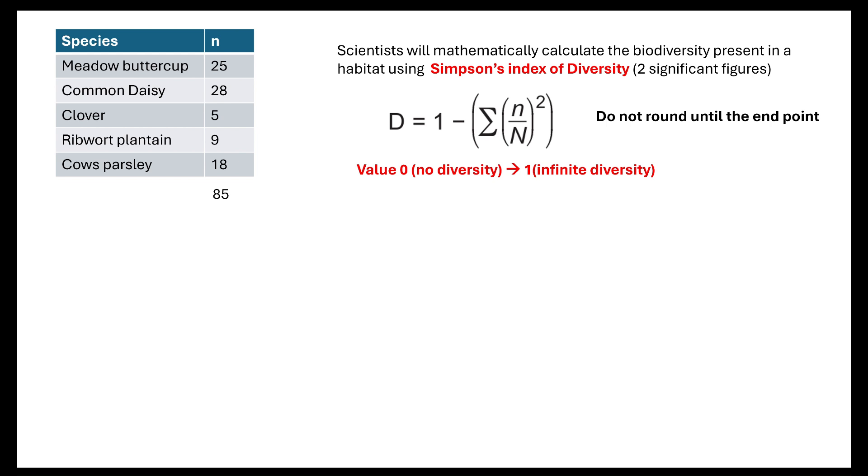In this example, you can see my five species of plants. My total number is 85. I would then substitute those numbers in and that would give me a Simpson's index of diversity of 0.75. So rounding it and doing it to two significant figures. Do not round until you get to that end point. That's very important. Then you would draw a conclusion that this would give you a high species biodiversity.